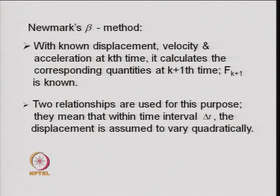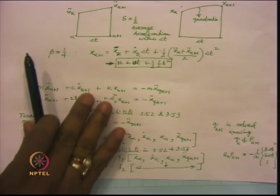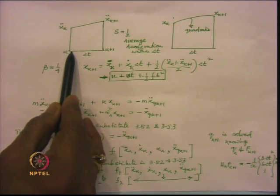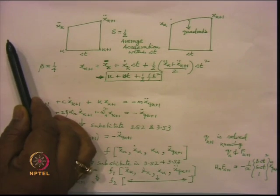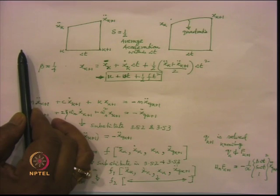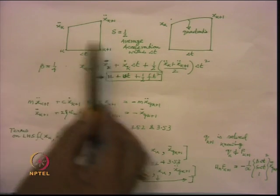Next is the Newmark beta method. In the Newmark beta method, we again solve the problem numerically using a time-marching scheme — finding the response at step k+1 using the response at step k. We start at time zero where displacement, velocity, and acceleration are specified, and march forward step by step.